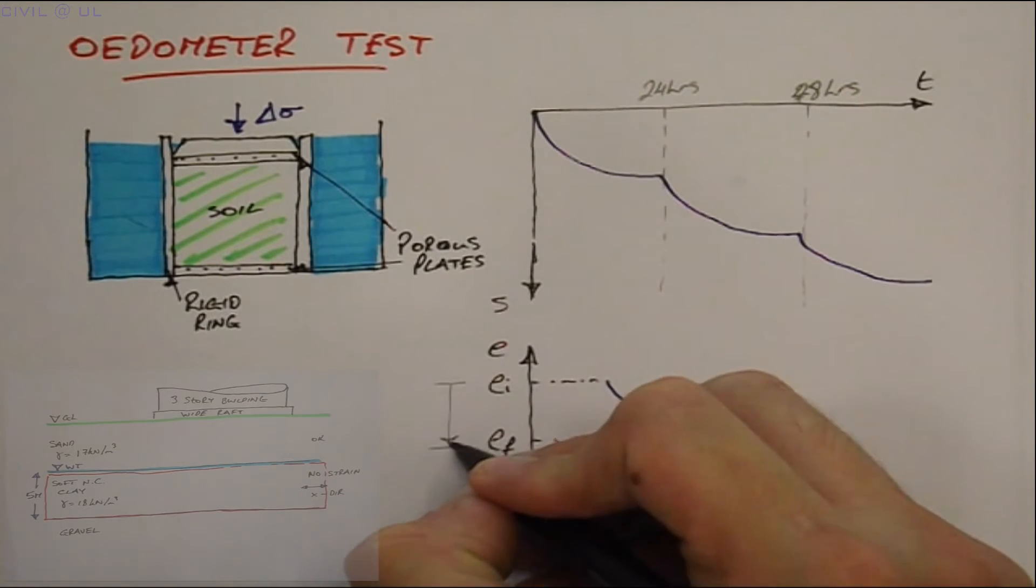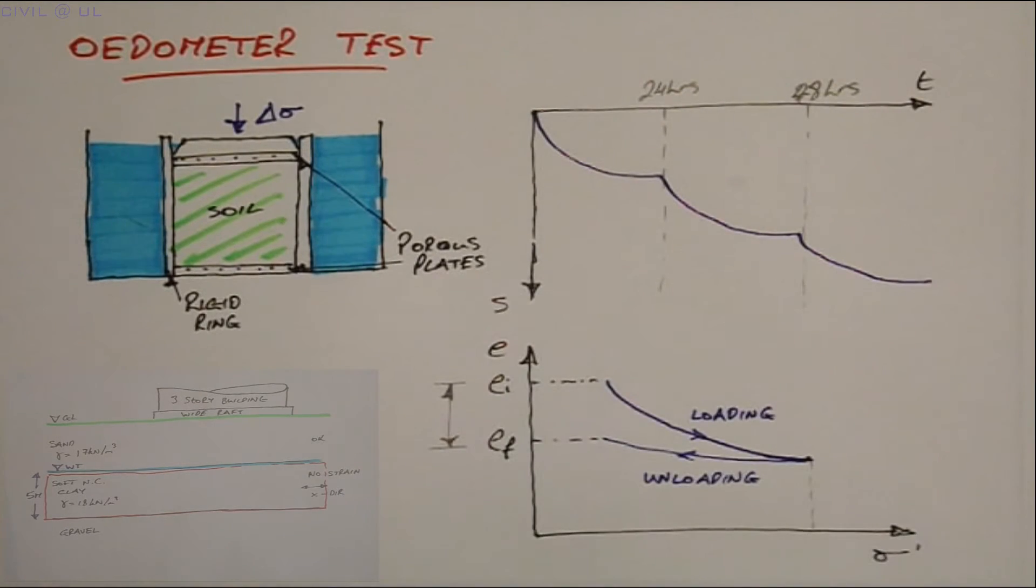Note also that as the ring is rigid, compression is constrained to take place in the vertical direction—that is, it is one-dimensional vertically. As such, the odometer test provides a good representation of the loading conditions beneath the raft.